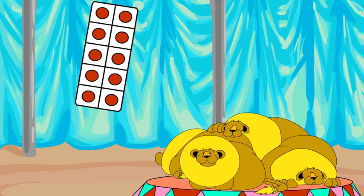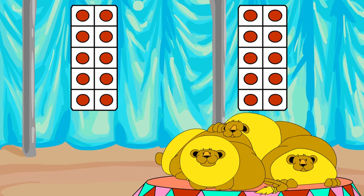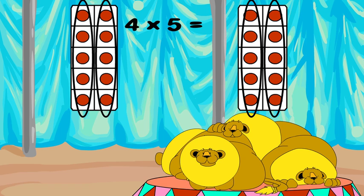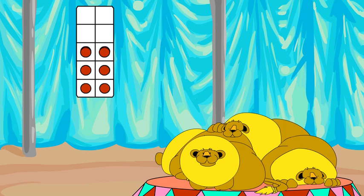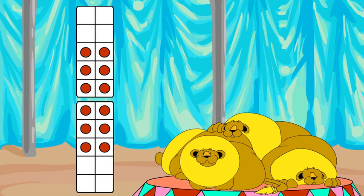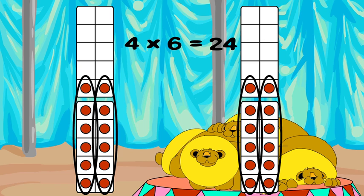Two times five is ten. Double ten — that's twenty. So four times five is twenty. Two times six is twelve. Double twelve — that's twenty-four. So four times six is twenty-four.